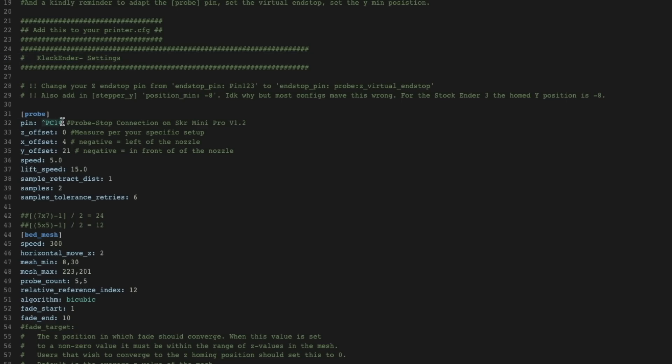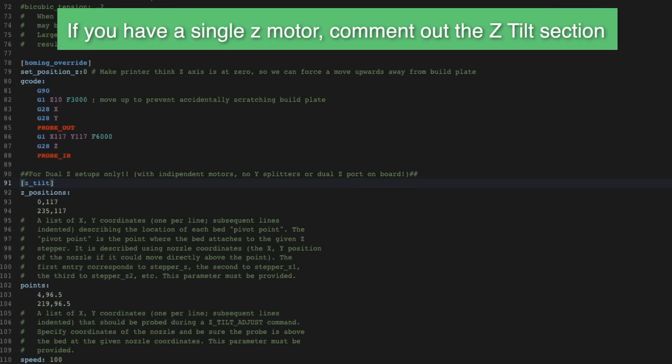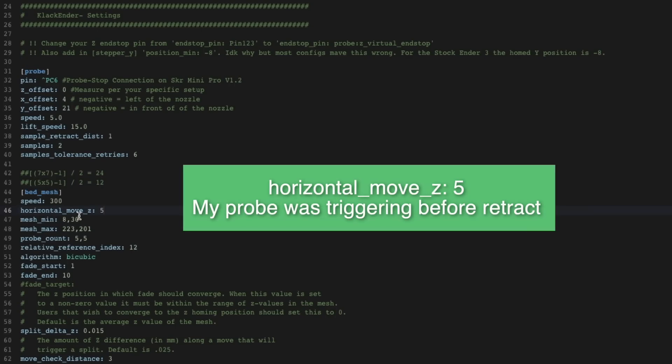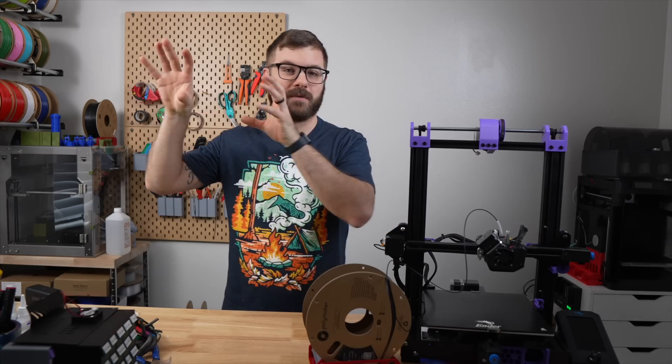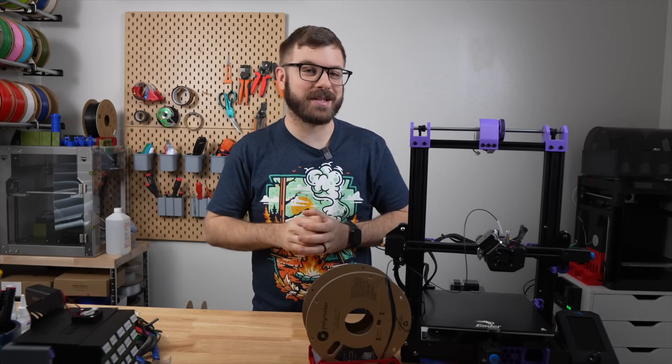Next we need to create a file called clackender.cfg and paste in the entire clackender config in the GitHub repository. Here you will need to define the pin for your clicky probe. To do this, just type in the pin ID that you wrote down from your previous Z endstop. For my setup, I only have one Z motor and I was getting an error so I had to disable the Z tilt. I also had to slightly increase the horizontal move Z. Having all of the probe specific settings in its own file definitely helps keep things very organized.